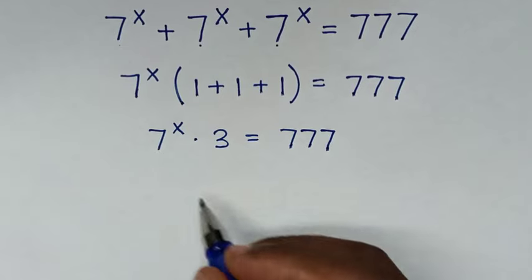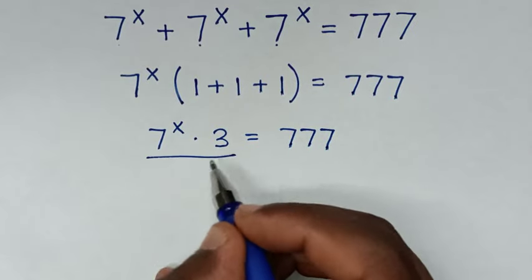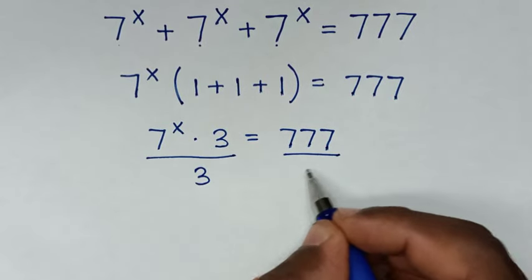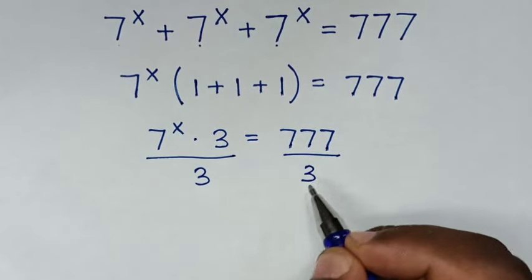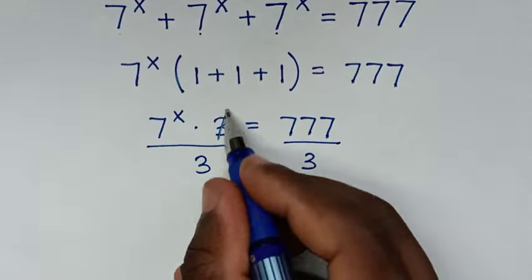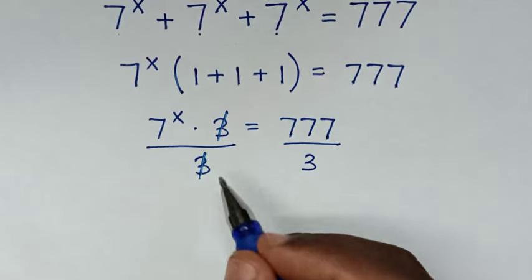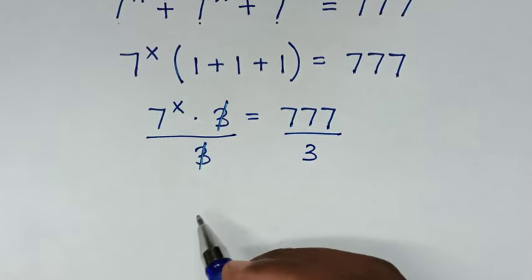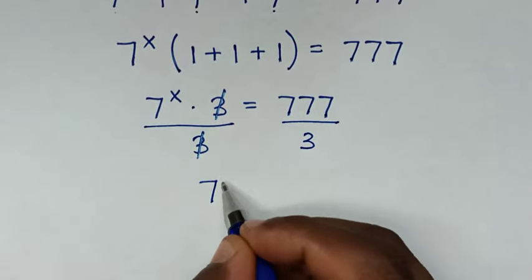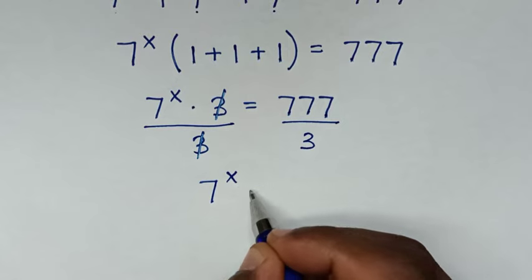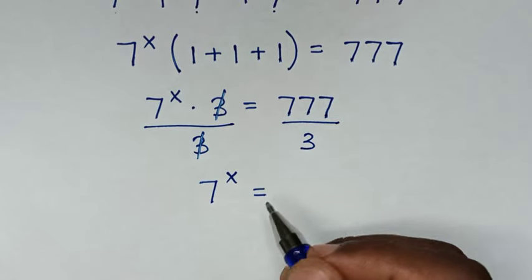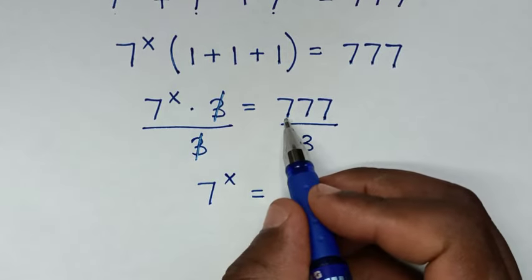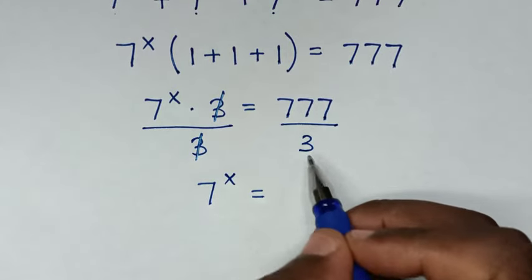Then in the next step, we divide by 3 on both sides. So the 3 and 3 will cancel, then it will be 7 power x is equal to 777 divided by 3.